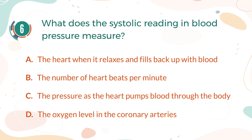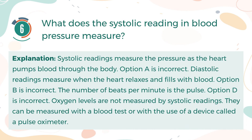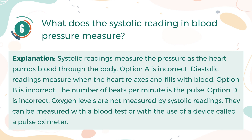The correct answer is C. The pressure as the heart pumps blood through the body. Explanation: Systolic readings measure the pressure as the heart pumps blood through the body. Option A is incorrect. Diastolic readings measure when the heart relaxes and fills with blood. Option B is incorrect. The number of beats per minute is the pulse. Option D is incorrect. Oxygen levels are not measured by systolic readings. They can be measured with a blood test or with the use of a device called a pulse oximeter.